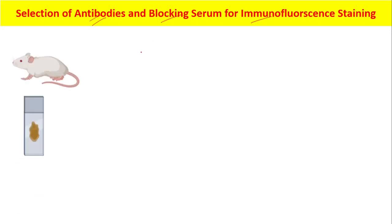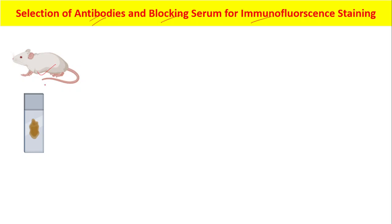First, as an example, here we have a mouse, and from the mouse we prepared a liver section. So now we have the liver section — it is a cryo section on the slide.